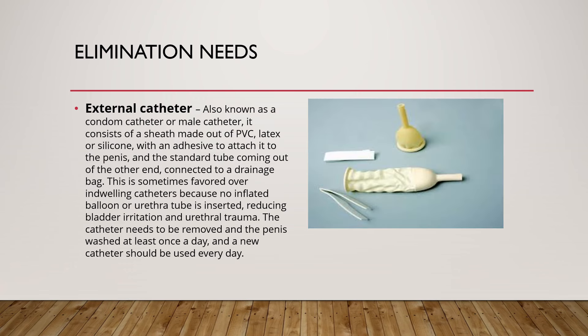External catheter, also known as a condom catheter or male catheter: it consists of a sheath made of PVC, latex, or silicone with an adhesive to attach it to the penis, and a standard tube connected to a drainage bag. This is sometimes favored over an indwelling catheter because no inflated balloon or urethral tube is inserted, reducing bladder irritation and urethral trauma. The catheter needs to be removed and the penis washed at least once a day, and a new catheter should be used every day.